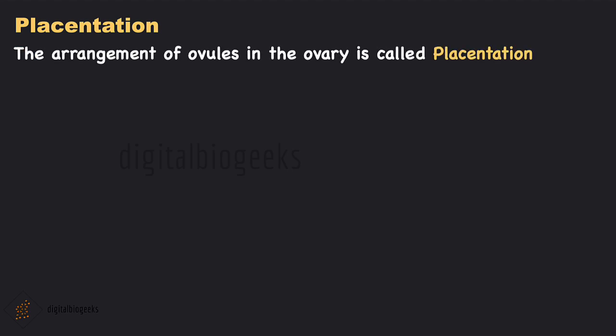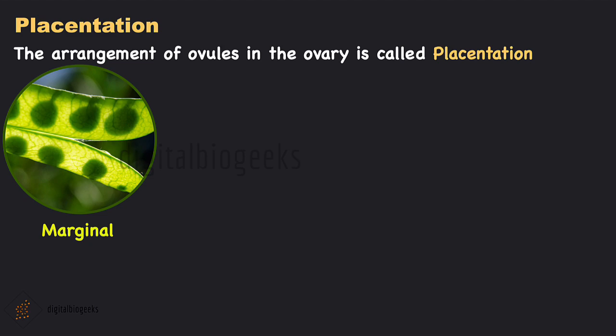The arrangement of ovules in the ovary is called placentation — they are arranged on the placenta, hence the name. In marginal placentation, the ovules are attached to the ovary wall along the margin or edge; the placenta is a ridge along the margin of the ovary and ovules are arranged in two rows along it — for example, pea.